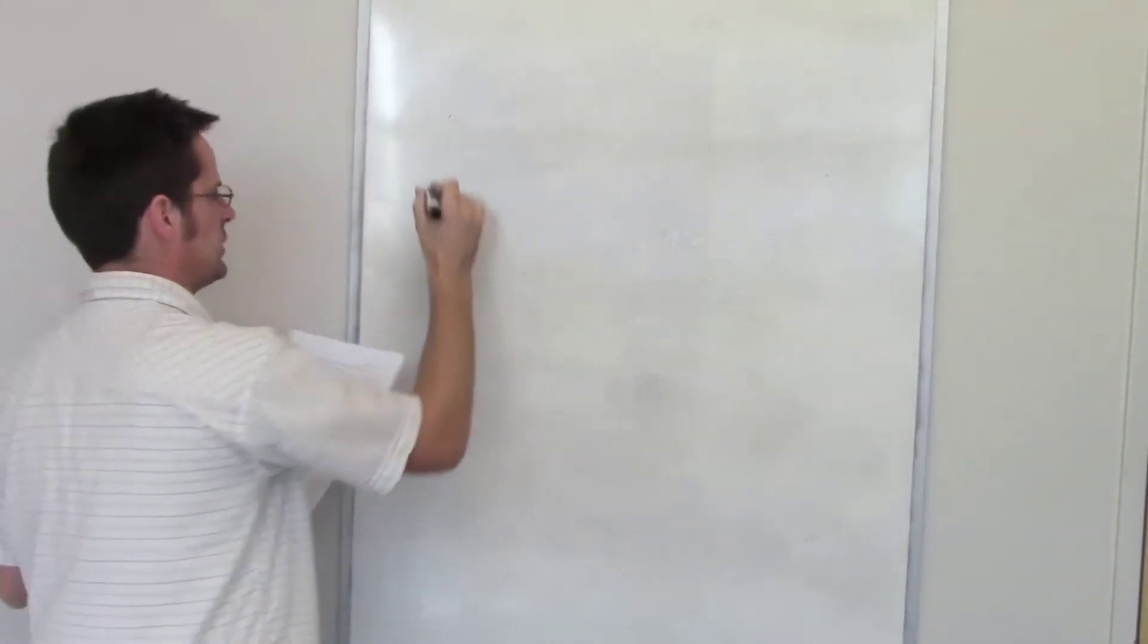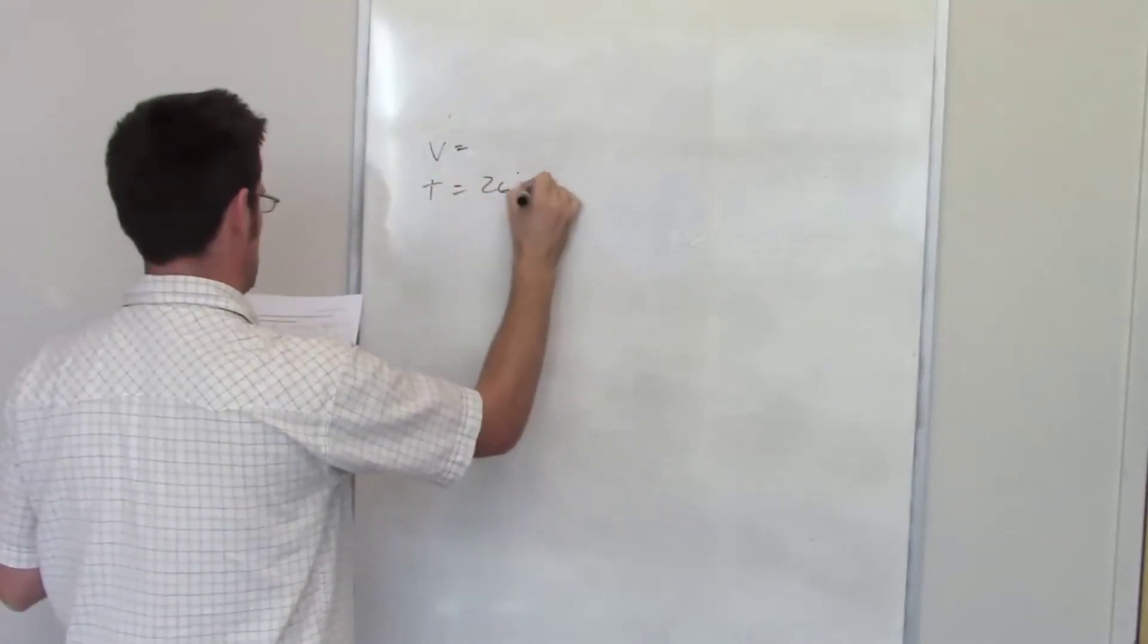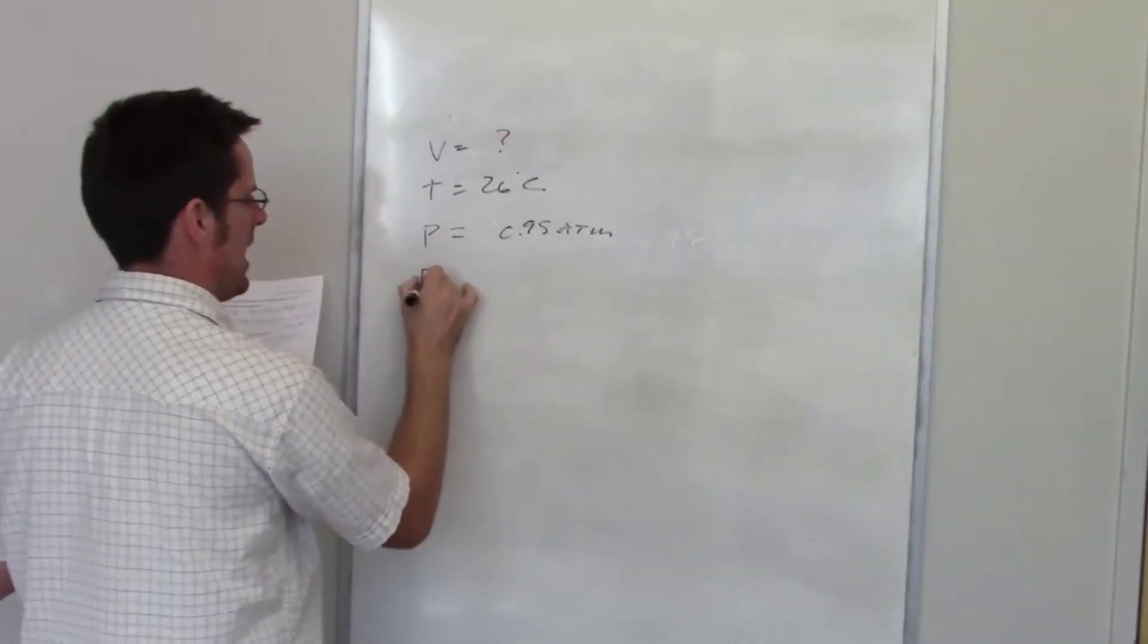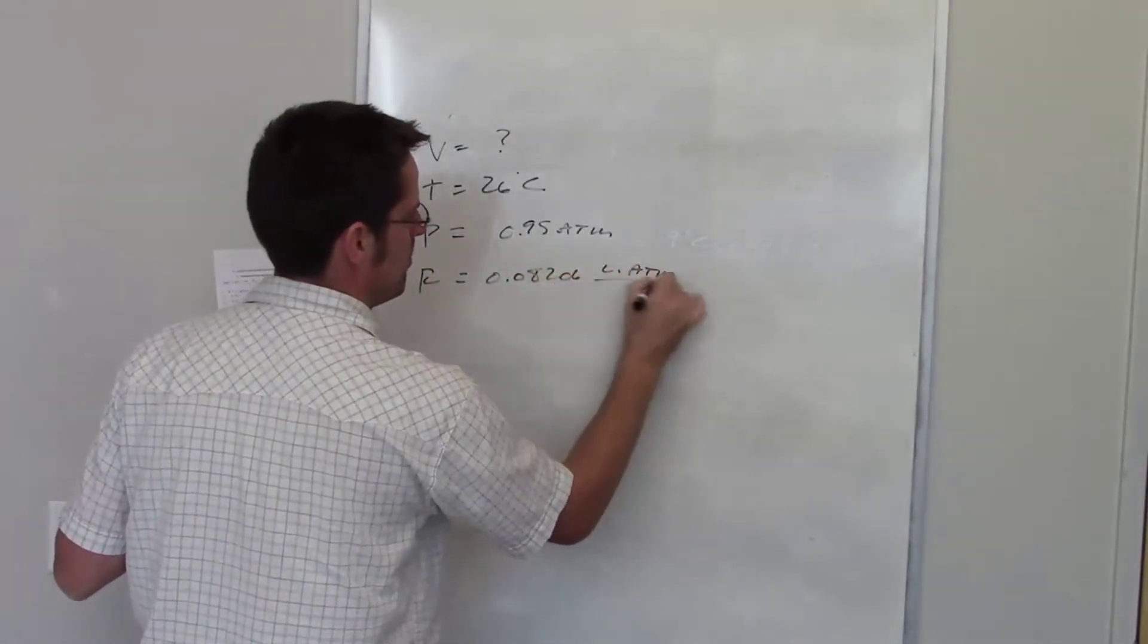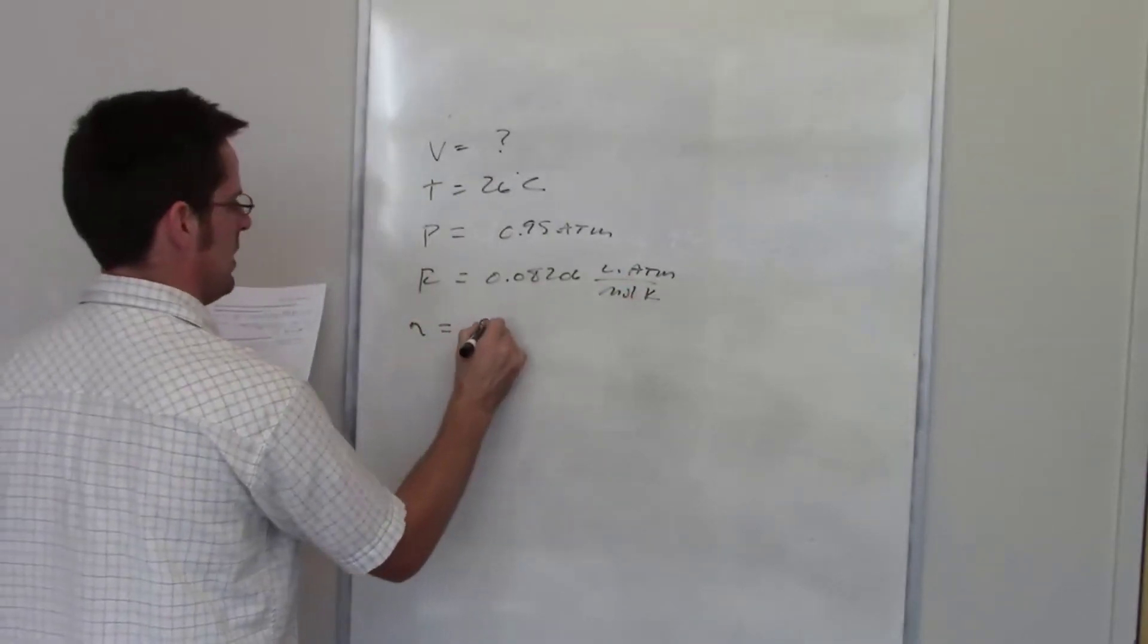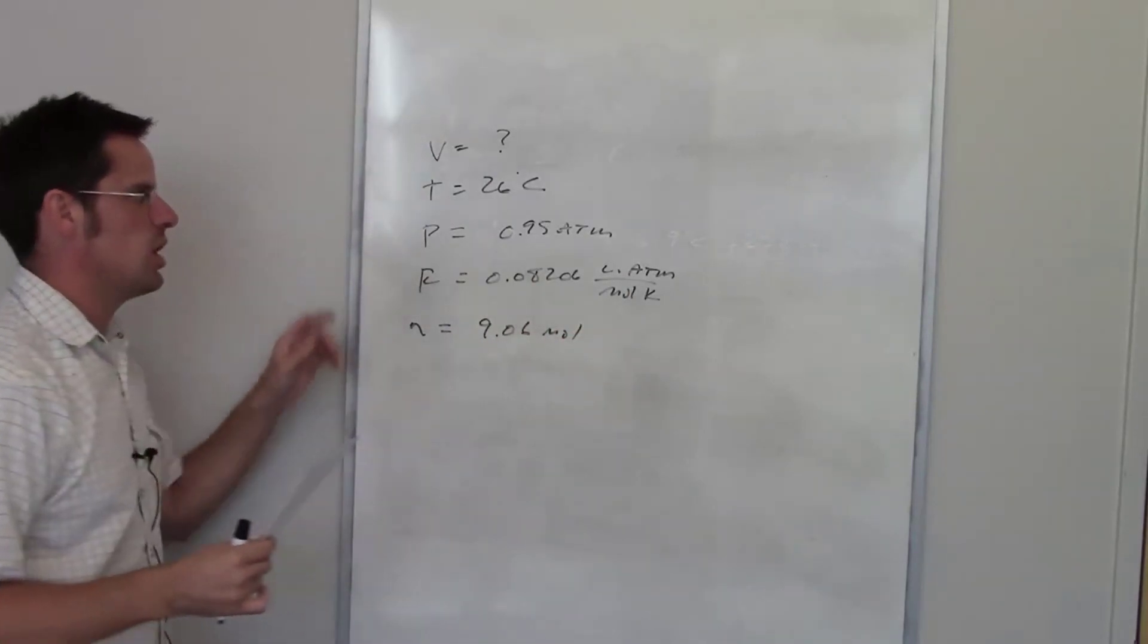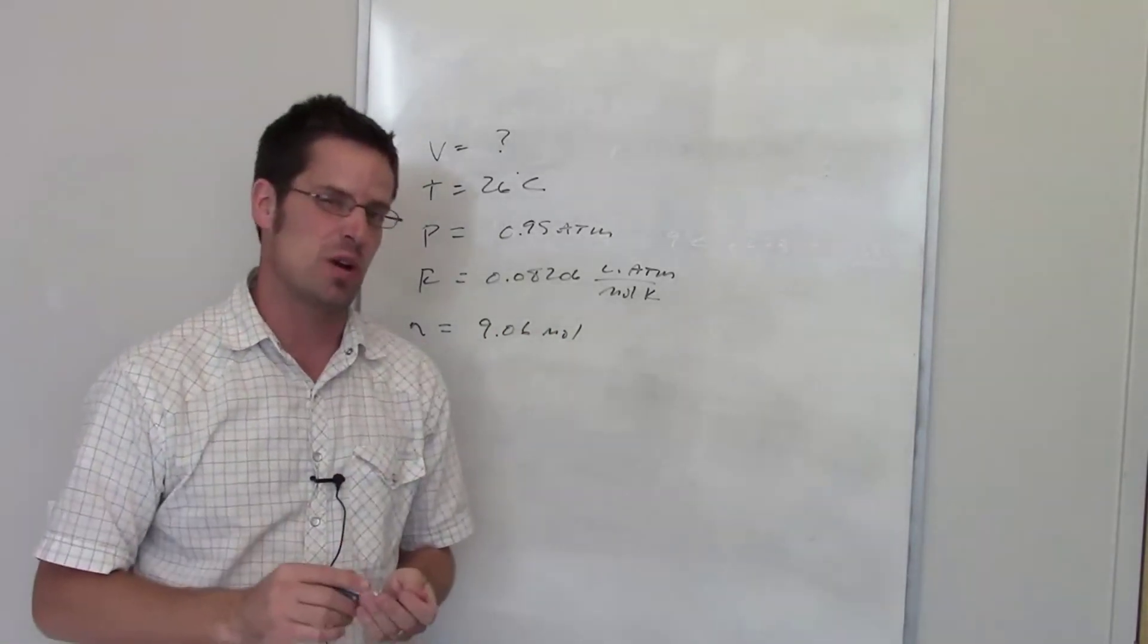Part B of this question asks us what volume would this oxygen occupy if the temperature were 26 degrees Celsius and the pressure were 0.95 atmospheres. The volume is the unknown. I already know what R is - it's 0.08206 liter atmospheres per mole. We've determined from our previous calculations the number of moles of oxygen is 9.06 moles. All I have to do is use the ideal gas law to determine the volume. I'm not going to do that here, but I'll let you try that on your own.